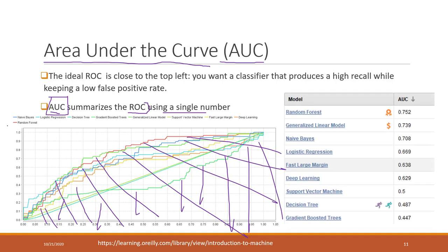Looking at the AUC values for these models, Random Forest has the highest AUC, followed by the Generalized Linear Model. The worst model with the lowest AUC is Gradient Boosted Trees. This is one way we can compare the performance of models — by using the ROC curve and checking the AUC.